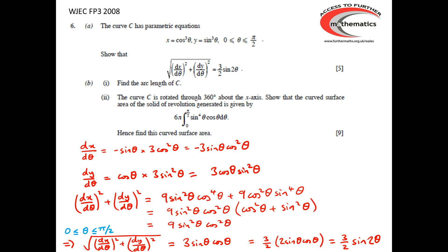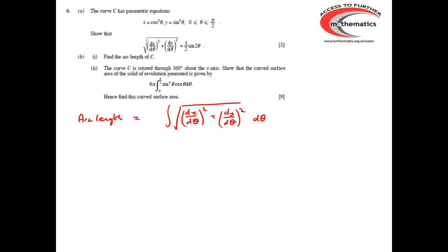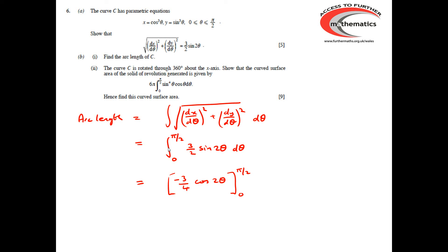For the arc length, we integrate the square root of (dx/dθ)² + (dy/dθ)², so that's the integral from 0 to π/2 of (3/2) sin 2θ. This integrates to [−(3/4) cos 2θ] from 0 to π/2. When θ = π/2, cos π = −1, giving 3/4. When θ = 0, cos 0 = 1, giving −(−3/4) = 3/4. Overall: 3/4 − (−3/4) = 3/2.